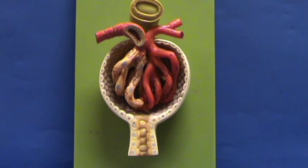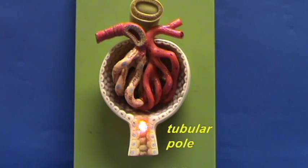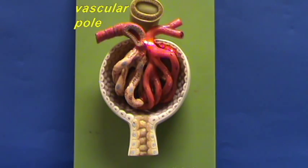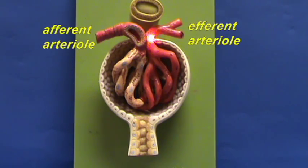As you look at the Bowman's capsule and the glomerulus together forming this entire structure, which is called the renal corpuscle, notice that it has a distinct polarity. This end is the tubular pole, which is the beginning of the proximal convoluted tubule. This is the vascular pole — this is how the afferent arteriole and the efferent arteriole enter and leave the renal corpuscle.